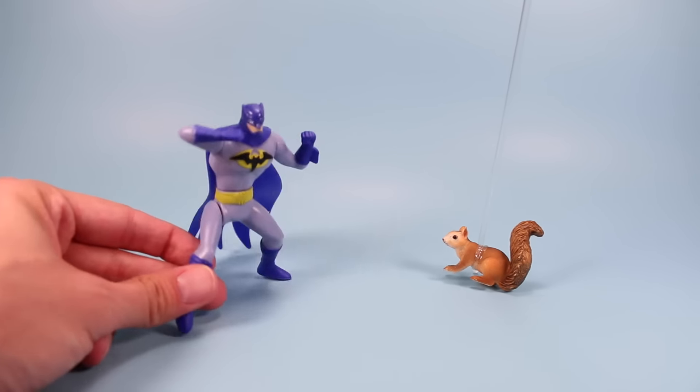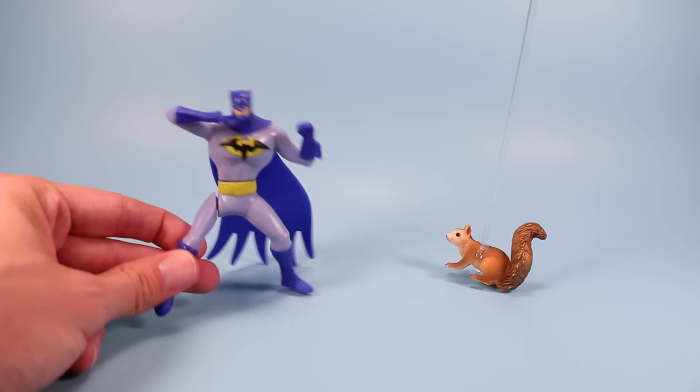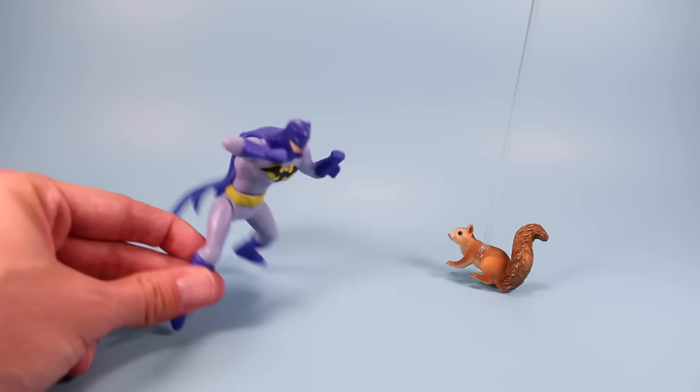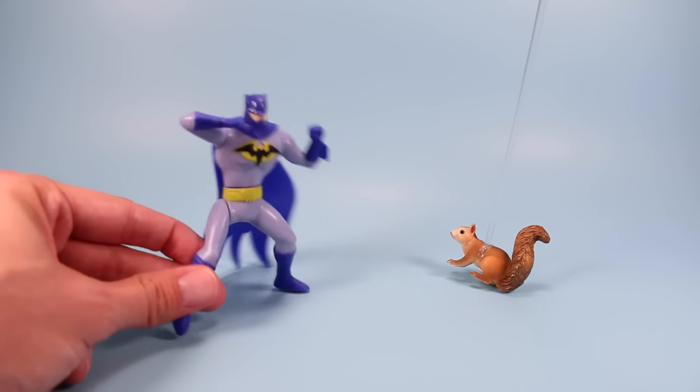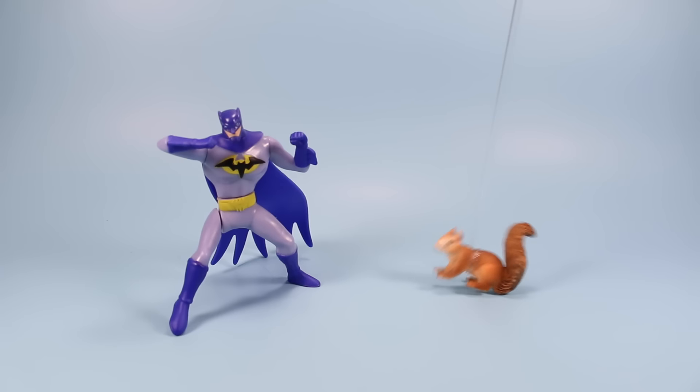You see, the Joker buys Happy Meals for the toys. And then when I pulled them over in my Batmobile, a bunch of Happy Meals fell out. Well, I had nothing to do but eat them all. That's a crazy story, Batman!